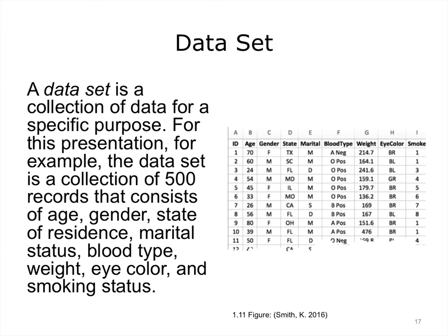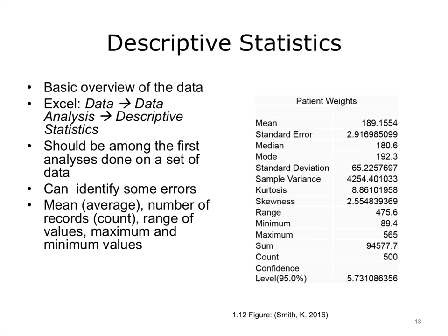A data set is a collection of data for a specific purpose. For this presentation, the data set is a collection of 500 records consisting of age, gender, state of residence, marital status, blood type, weight, eye color, and smoking status. Descriptive statistics give basic statistics of numeric data and should be one of the first analyses run on a data set. Descriptive statistics can identify some errors — for example, does the count of records match what was expected? Do the minimum and maximum values look reasonable for the range of patient weights? Does the mean look reasonable?